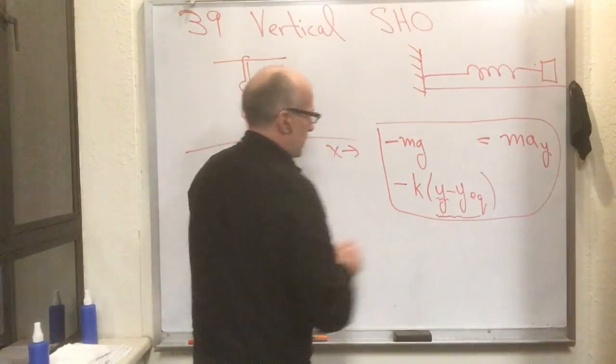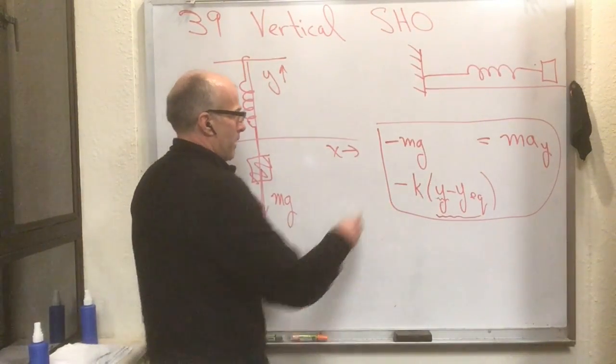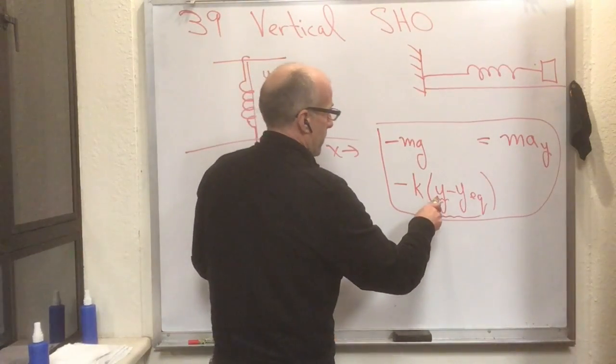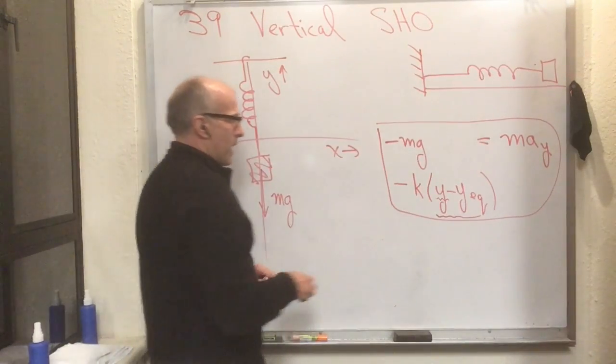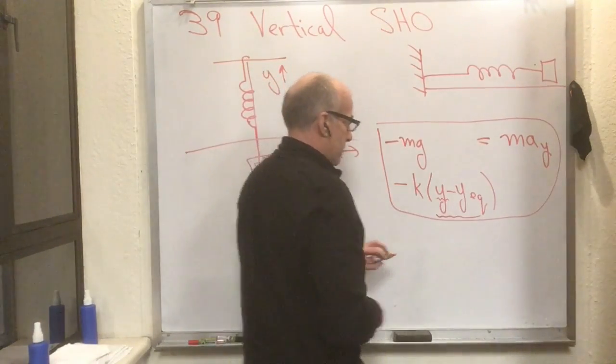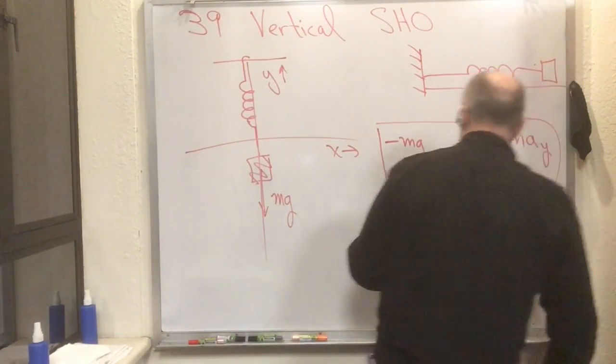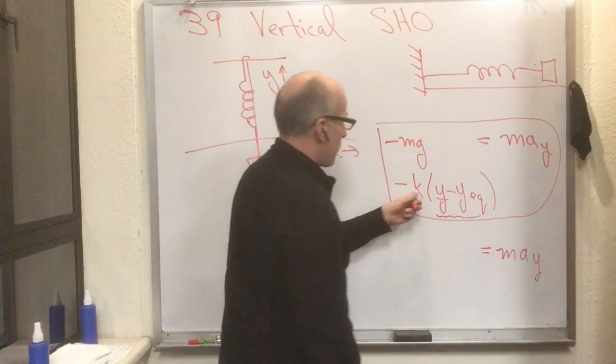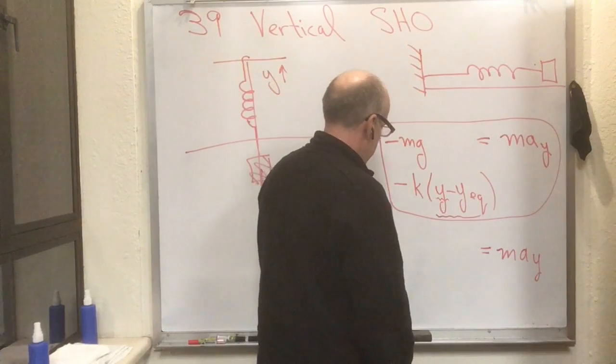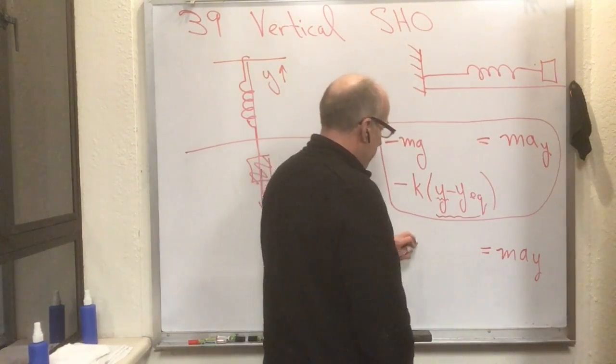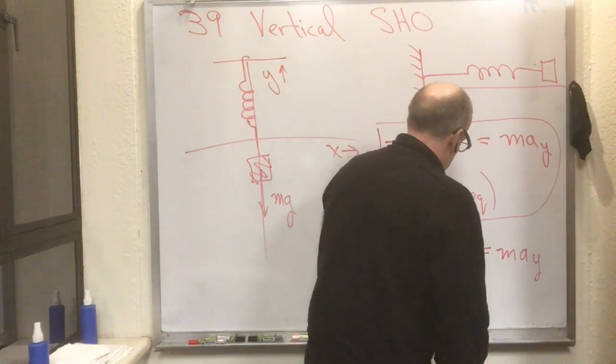Now here's what you do with this. All you do is you rewrite it a little bit. So you have the minus mg and the minus k(y minus y_eq). Notice that I could rewrite this—on the right hand side I'm going to keep the m·a_y—on the left hand side I'm going to rewrite this as minus k times (y minus y_new_eq).